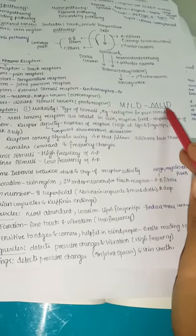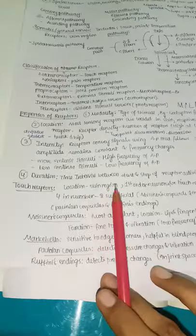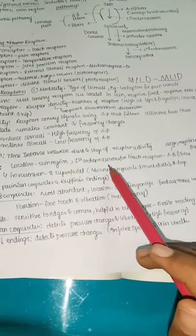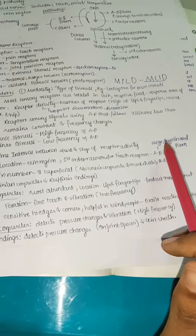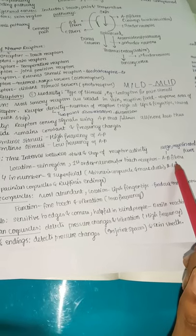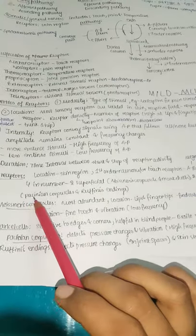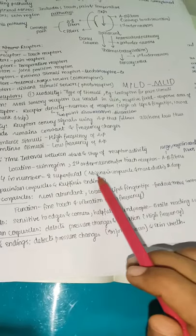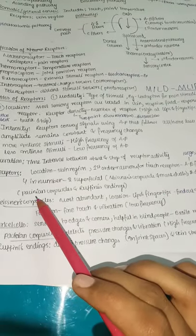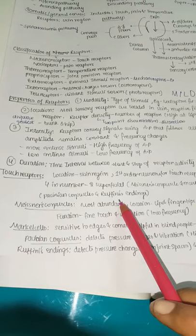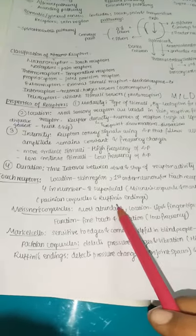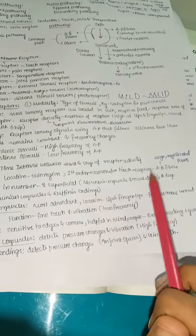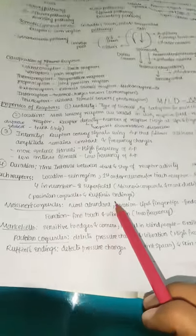Touch receptors are located in the skin. First-order neurons for touch are A-beta fibers — large myelinated fibers. There are four types: two superficial — Meissner's corpuscles and Merkel cells (both starting with M) — and two deep — Pacinian corpuscles and Ruffini endings.